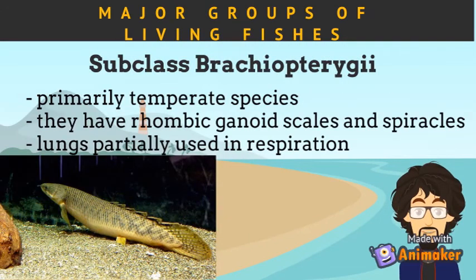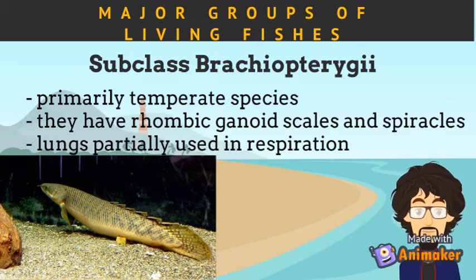Species under subclass Brachyopterygiae are primarily temperate species. They have rhombic ganoid scales with the presence of spiracles. Their lungs are partially used in respiration.